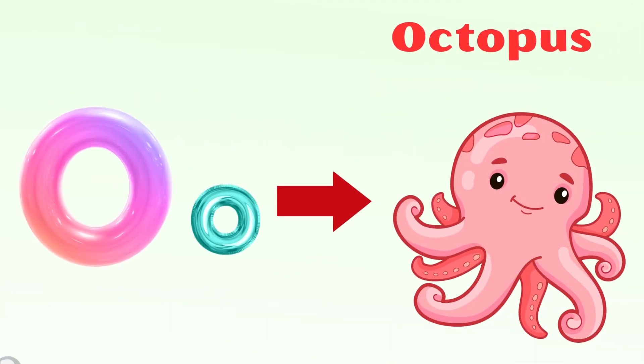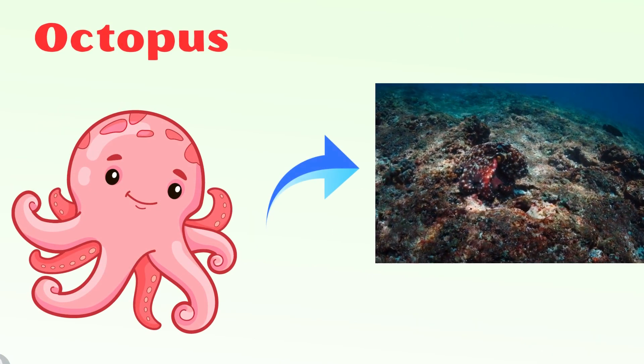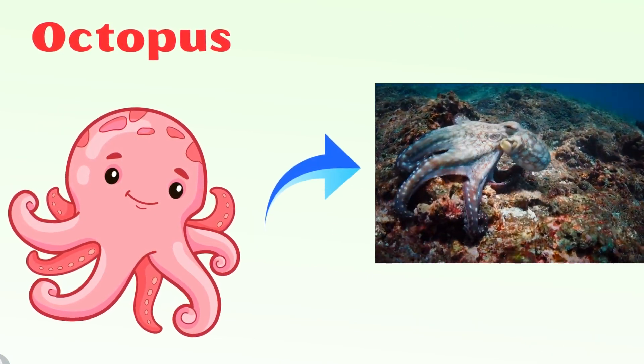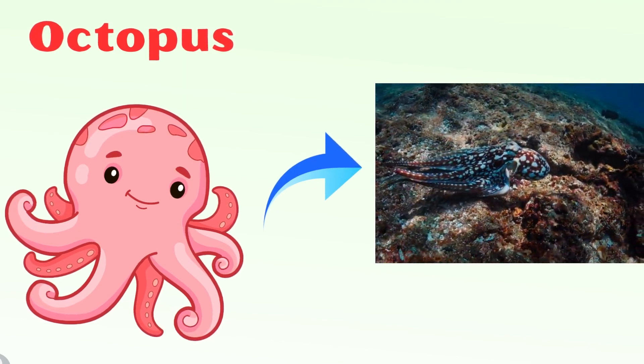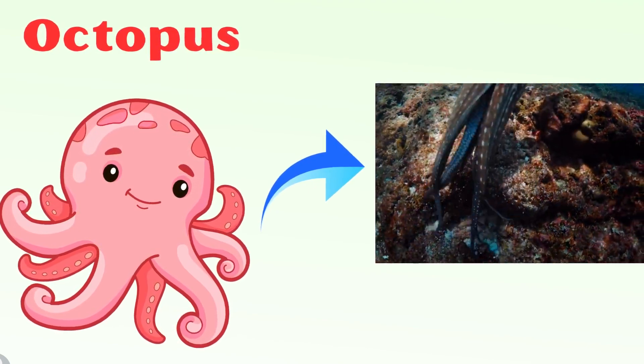O for octopus. Octopus is a sea animal, famous for its rounded body, bulging eyes, and 8 long arms.